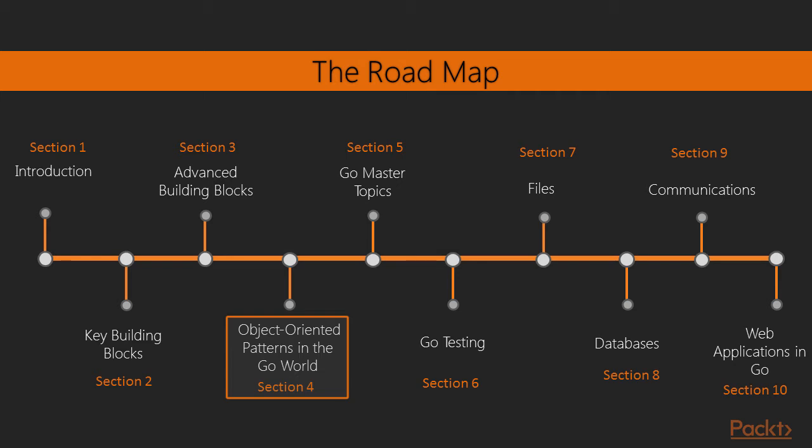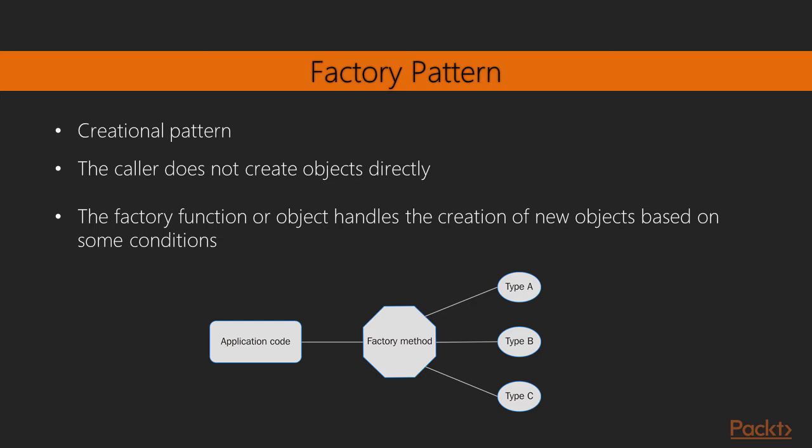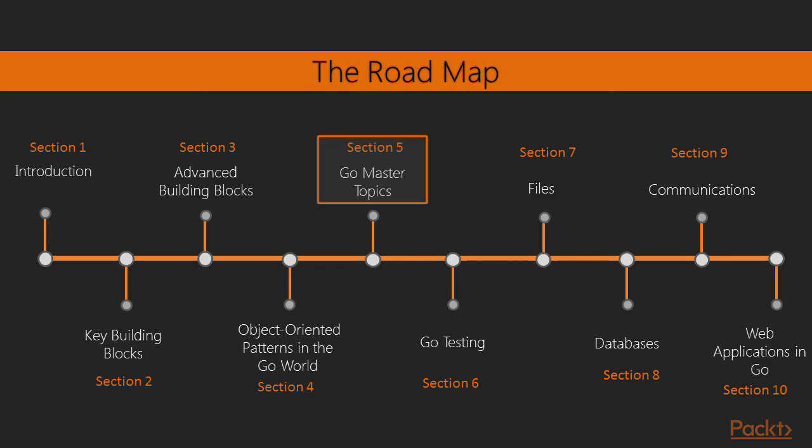In section 4, we will discuss advanced design concepts by covering object-oriented design patterns, which apply to any programming language. We will implement them in Go, going through some of the most popular patterns like the factory pattern, the singleton pattern, and the builder pattern. We will also take a deep look into interfaces and methods in Go, which are key pillars needed to write code that adheres to object-oriented patterns.